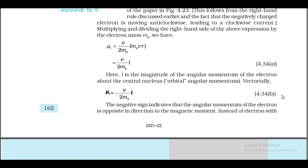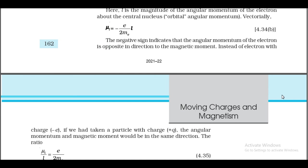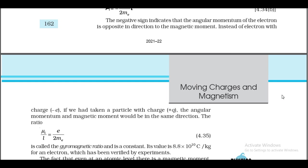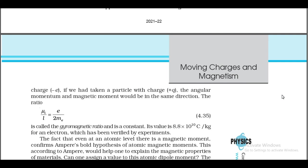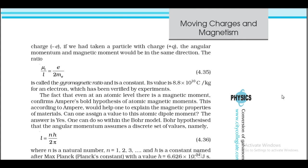Vectorially: μ_l = −(e/2m_e)·L. The negative sign indicates the angular momentum of the electron is opposite in direction to the magnetic moment. The ratio μ_l/L = e/(2m_e) is called the gyromagnetic ratio and is a constant. Its value is 8.8×10¹⁰ C/kg for an electron, verified by experiments. The fact that even at an atomic level there is a magnetic moment confirms Ampere's bold hypothesis of atomic magnetic moments, which would help explain the magnetic properties of materials.